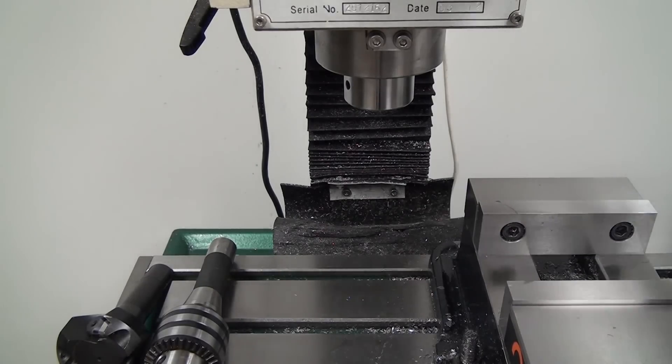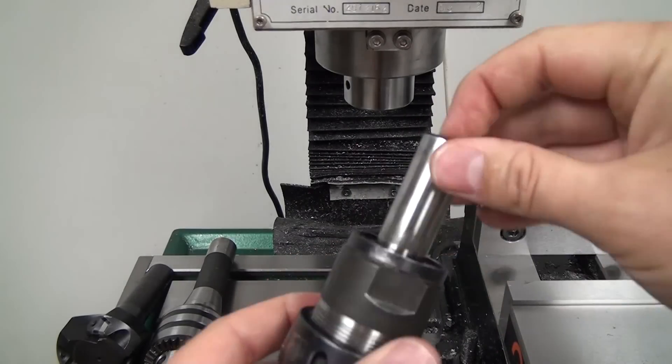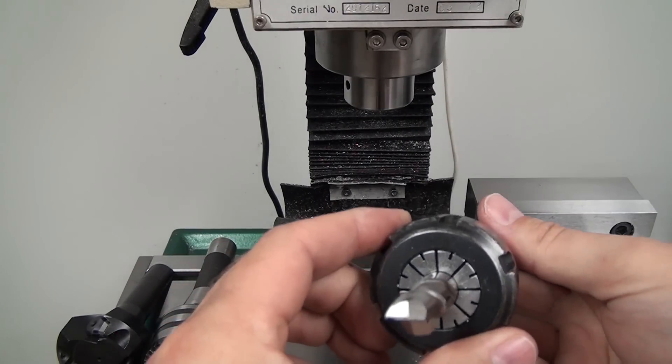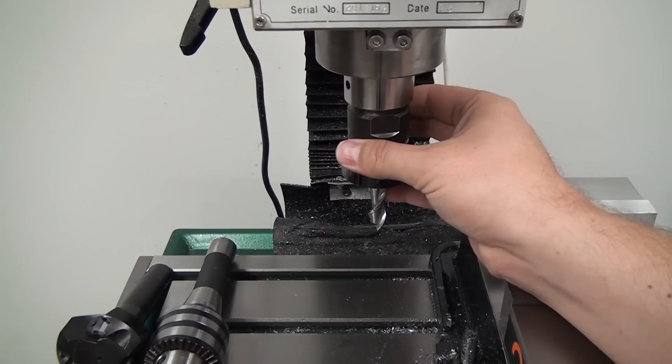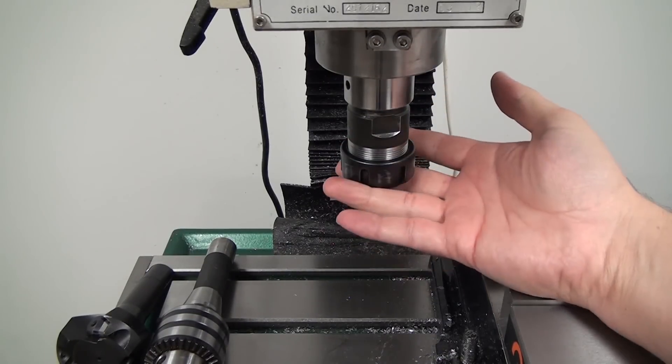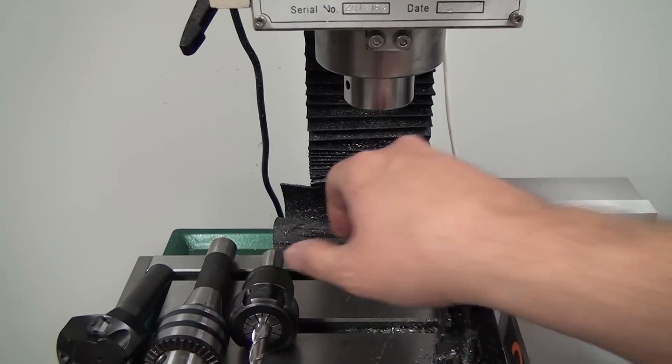So this is an ER32 collet holder. It's not a Tormach tool, but it's compatible with the system. And the great thing about this is it only takes about a half turn of the drawbar to tighten or install the tool and then a half turn the other way will break the tool loose and you can swap it out for another collet holder or end mill holder. So it's quite a bit faster and that's kind of what the convenience is.